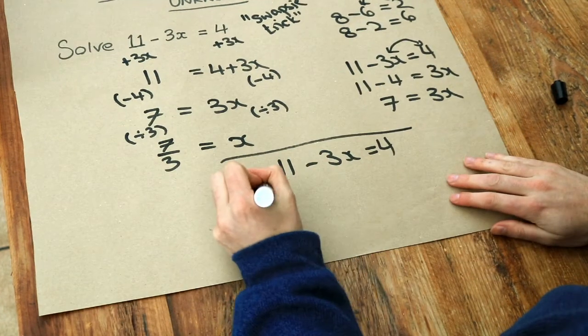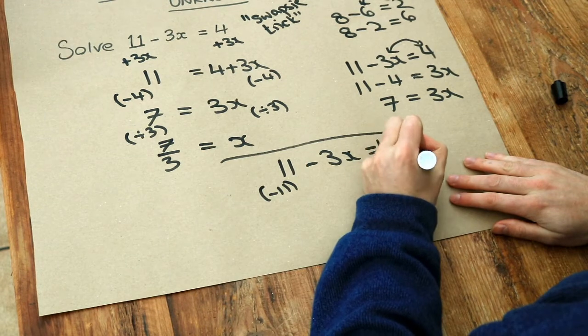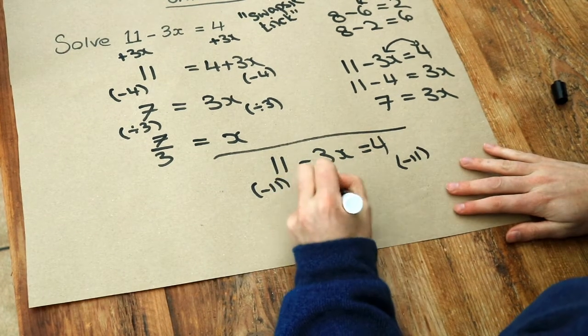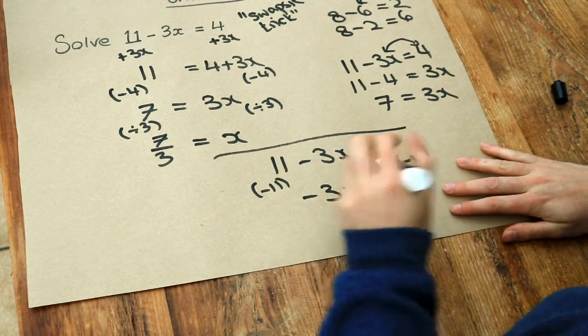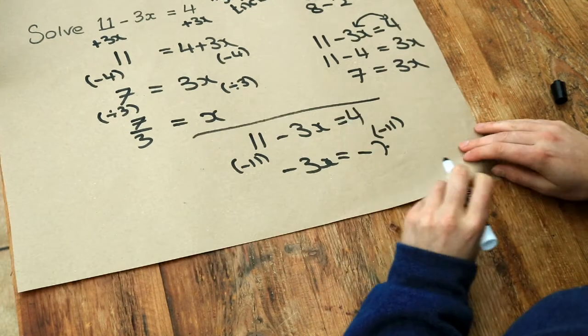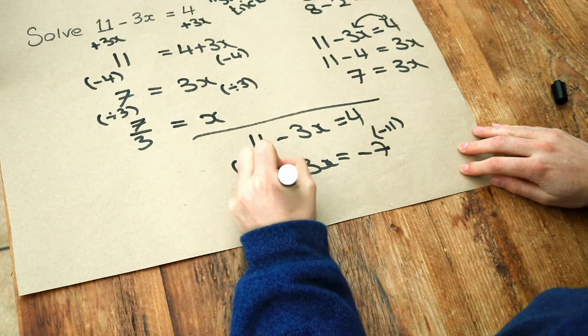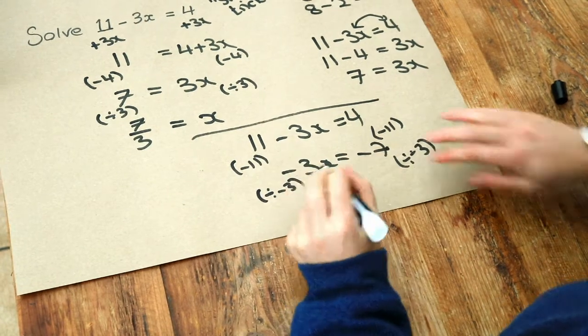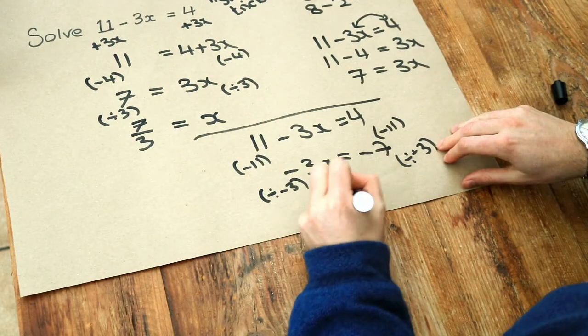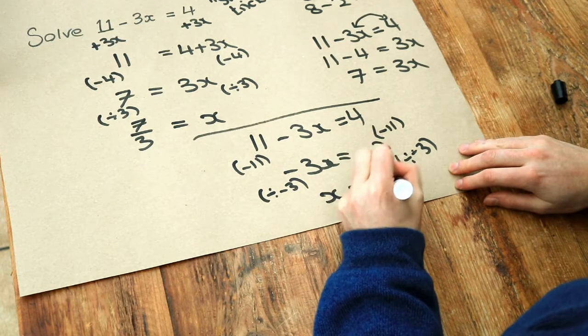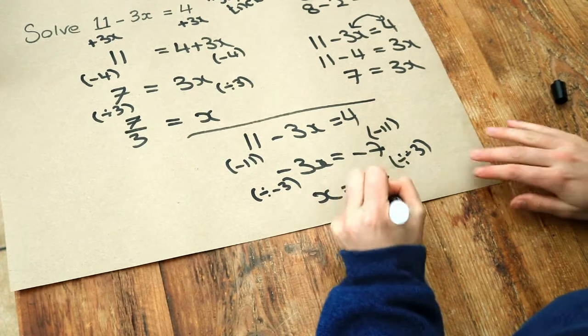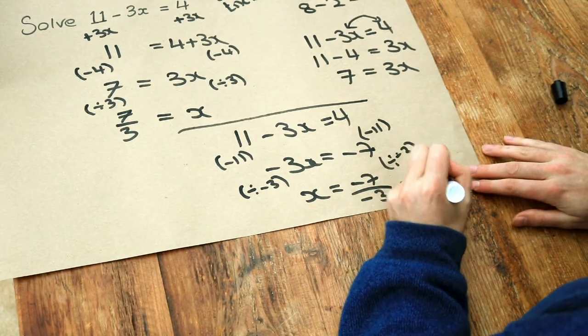If we subtract 11 from both sides, we get minus 3x, and then 4 minus 11 is minus 7. And then x has been multiplied by minus 3, so we divide both sides by negative 3. And then that gets rid of the minus 3 there. And then we do minus 7 divided by minus 3. And because negative divided by negative is positive, we get 7 over 3.